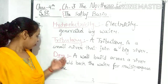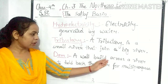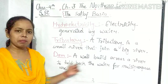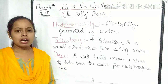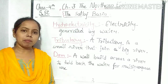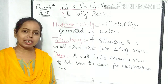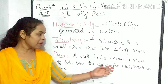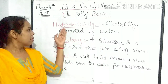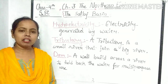What is a dam? A wall built across a river to hold back the water for multipurpose use. Jab kisi nadi ke paani ko rokne ke liye wahan par deewar bana ke us nadi ke paani ko rok diya jaata hai, aur us paani ka use multipurpose kamon ke liye kiya jaata hai — jaise ki bijli banana, irrigation karna, sinchai karna — use dam kehte hain.